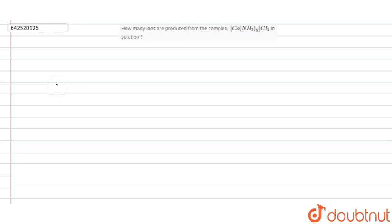So the question is, how many ions are produced from the complex [Co(NH3)6]Cl2 in solution? How can we find the ions produced in this complex solution? We can use Werner's theory.